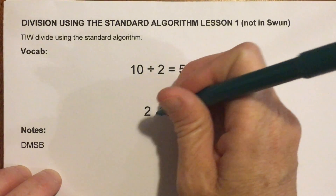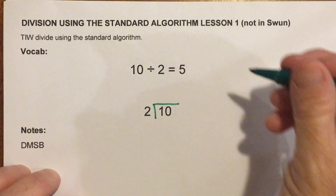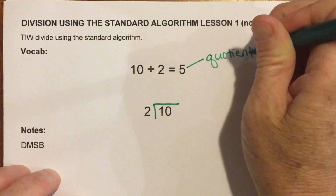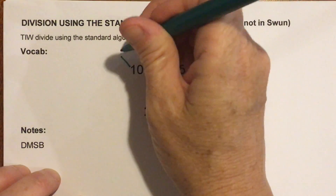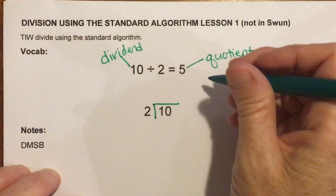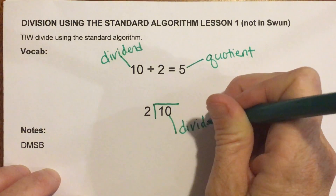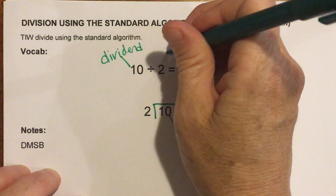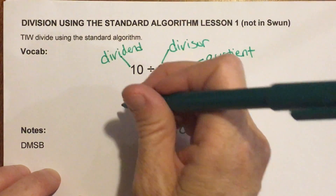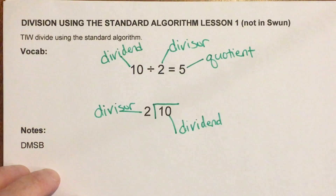Our vocab today: first, remember that the answer for division is called the quotient. The number you're dividing is called the dividend. And the number you're dividing it by is called the divisor. It's really important that we master those three words.